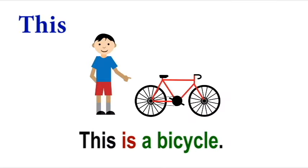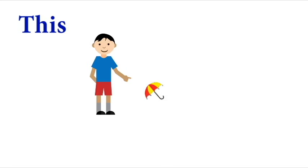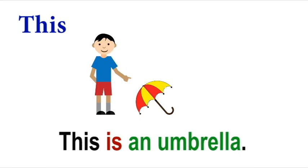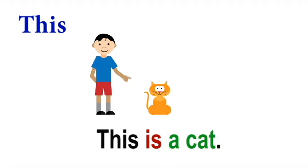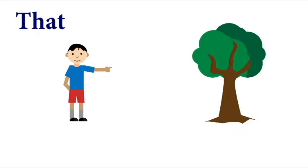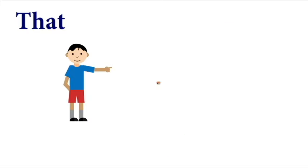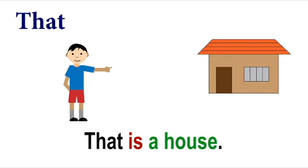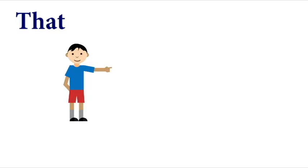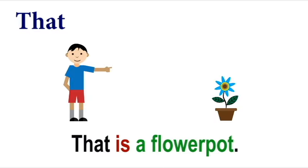This is a bicycle. This is an umbrella. This is a cat. This is a tree. This is a house. This is a flower pot.